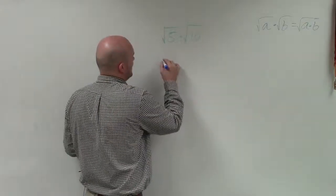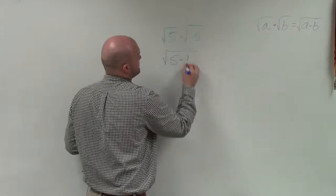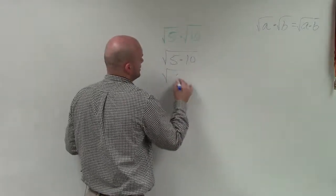By multiplying, I now have square root of 5 times 10, which is equal to the square root of 50.